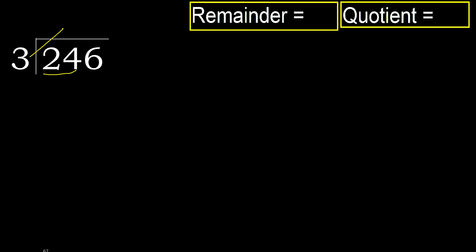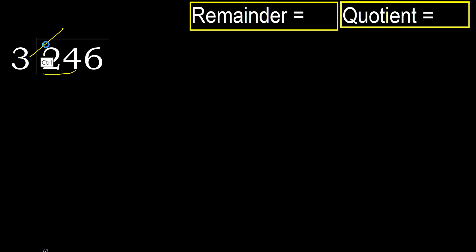3 multiplied by which number is nearest to 24 but not greater. 3 multiplied by 9 gives 27, which is greater. 3 multiplied by 8 gives 24, which is not greater. Subtract.